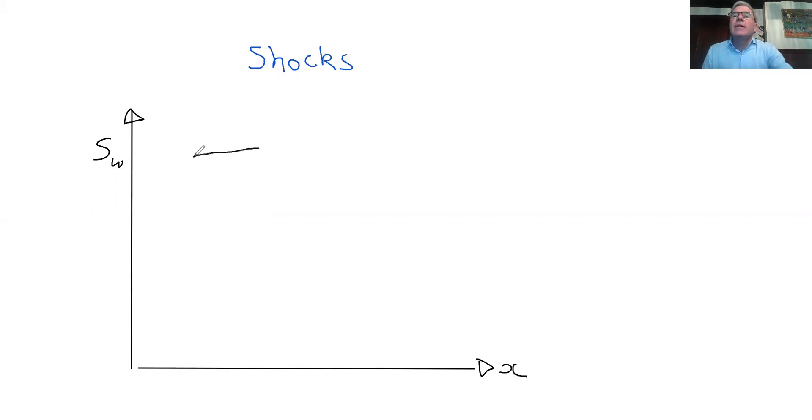But we have some saturation, which although it's not drawn very well, is supposed to be a constant saturation, which is a left state, and a saturation the other side, which we call S_W^R. So we have a saturation here, a saturation here, and a discontinuity.